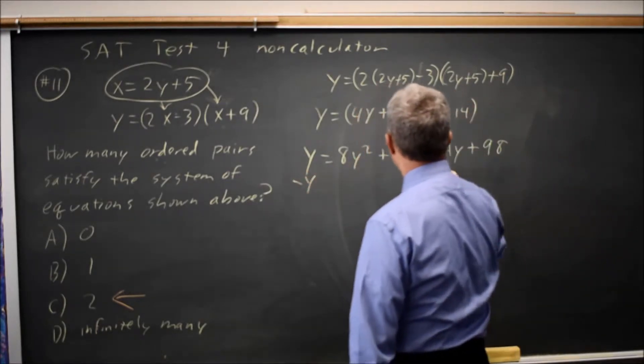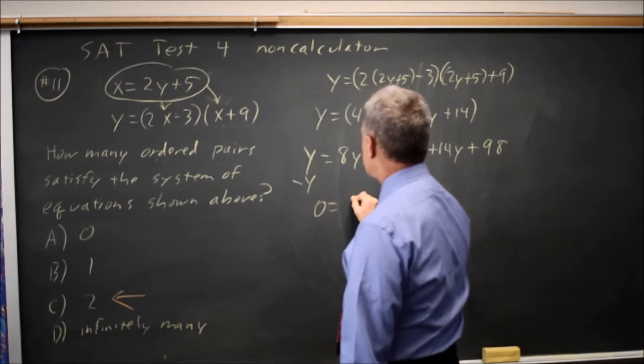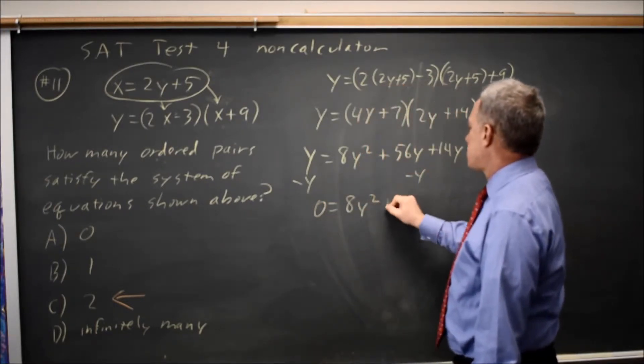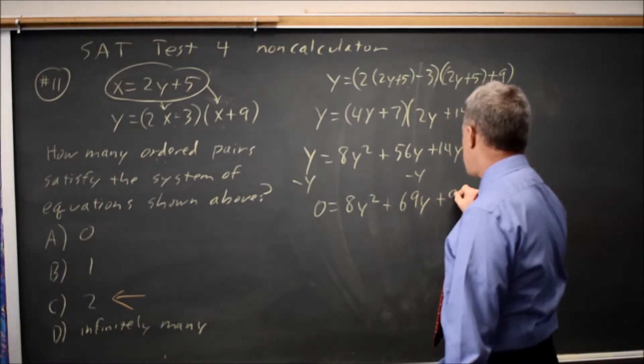Subtract y from both sides and combine the y terms on the right. 0 equals 8y squared plus 70y minus 1y is 69y plus 98.